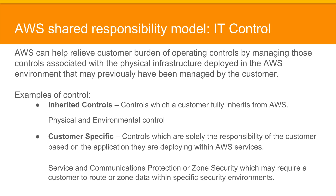Then there are customer-specific controls — the controls which are solely the responsibility of the customer based on the application they are deploying within Amazon Web Services. For example, service and communication protection, or zone security, which may require you to route or zone data within specific security requirements.